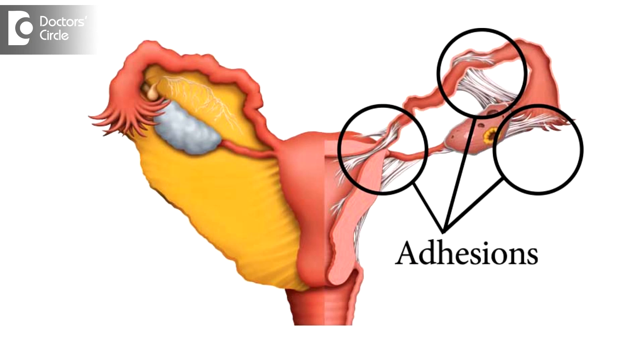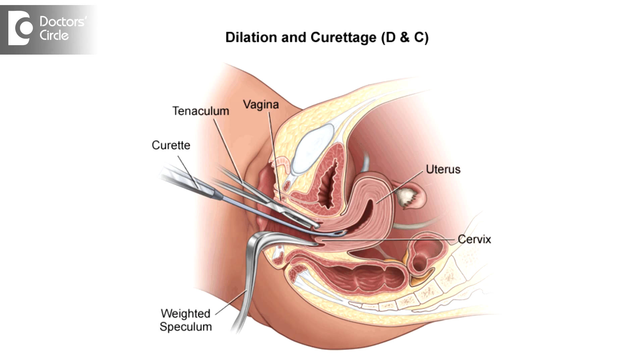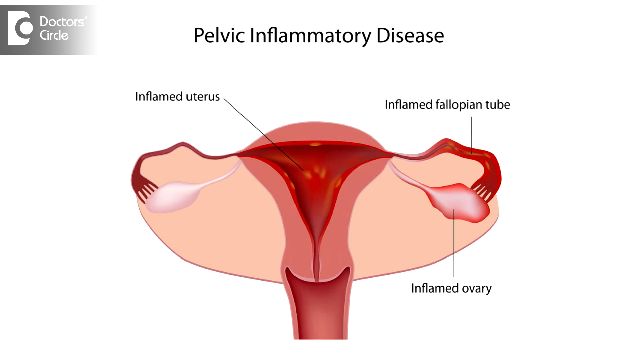Uterine causes include adhesions, synechiae, Asherman syndrome, scarring and damage of the endometrium following DNC, myomectomy, radiation treatment, and ablative therapy. It is also seen in PID.